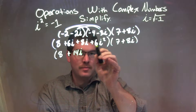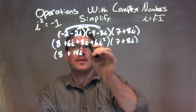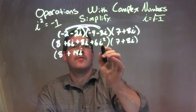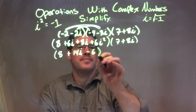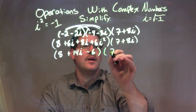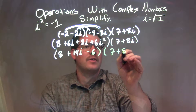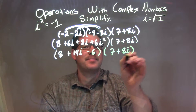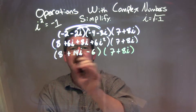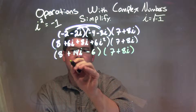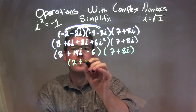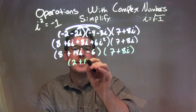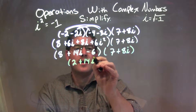And if you've been watching my videos, we know that i squared is negative 1. Negative 1 times 6 is negative 6. So 8 and negative 6 is 2, and we have 2 plus 14i here.